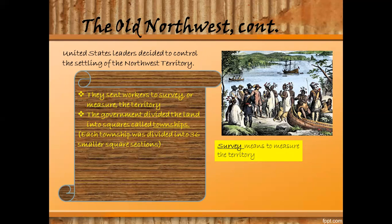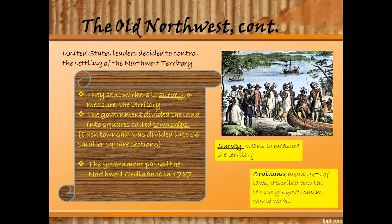So it was meant to be fair — before, people didn't have a title to the land; they could just claim a piece of land without really buying it. Third, the government passed the Northwest Ordinance in 1787. An ordinance is a set of laws that describes how the territory's government would work. It also explained how new states would be formed there.